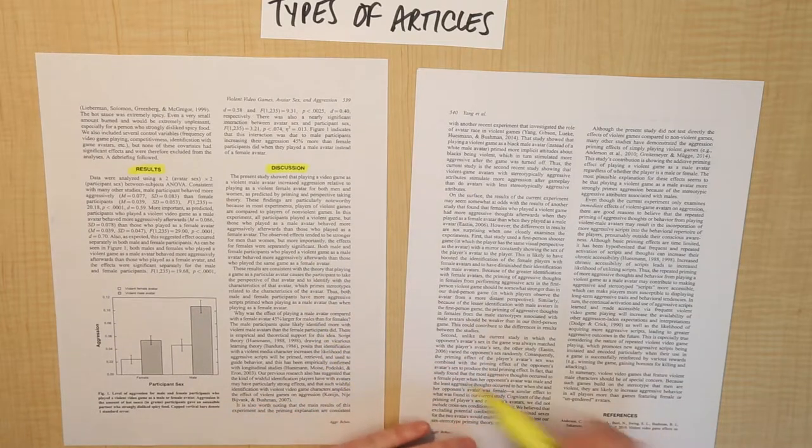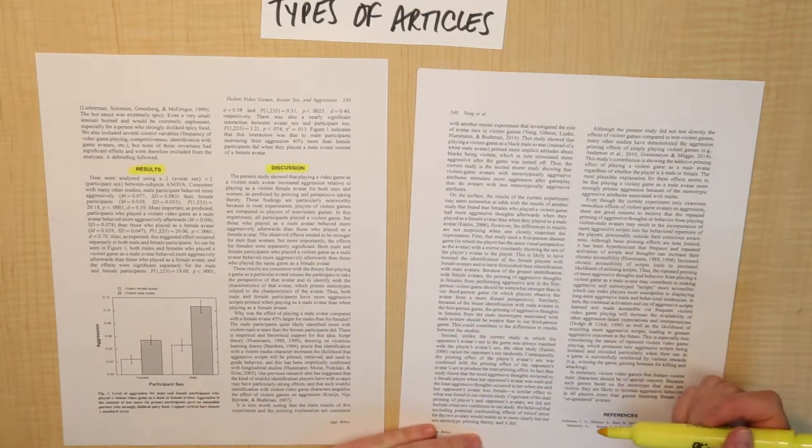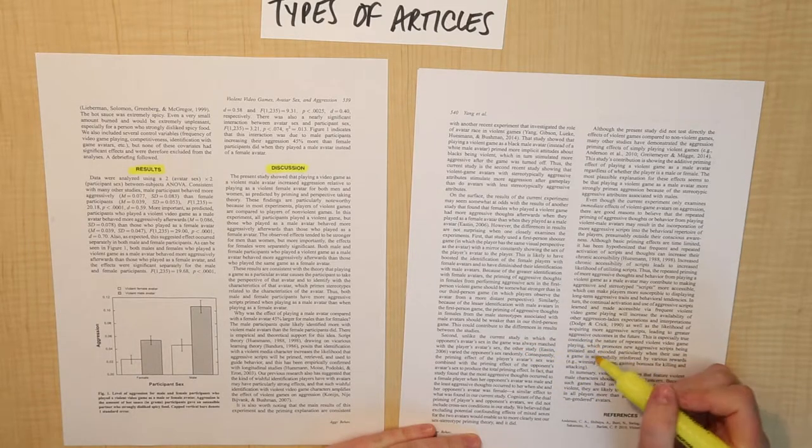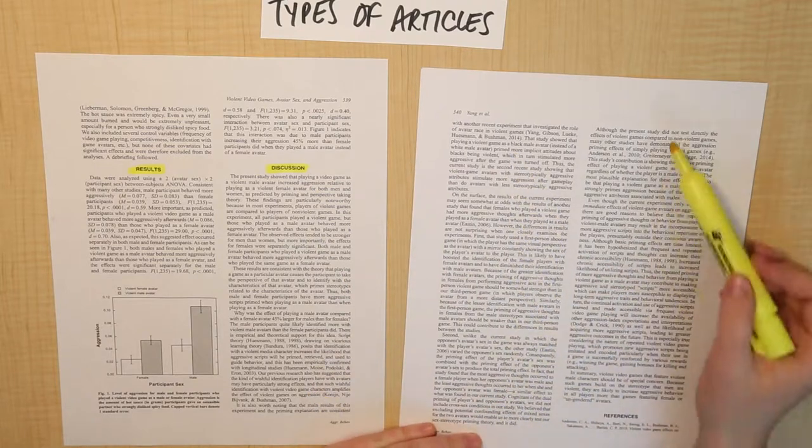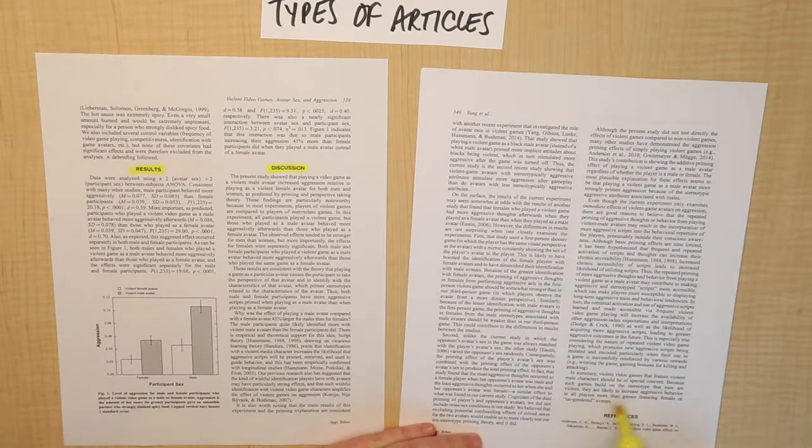Usually, the discussion section will lead into a final section, which is the conclusion. In this paper, they didn't specifically title it Conclusion, but as you can see, Discussion is the last section, and it goes all the way down to the end, and then the paper is done.